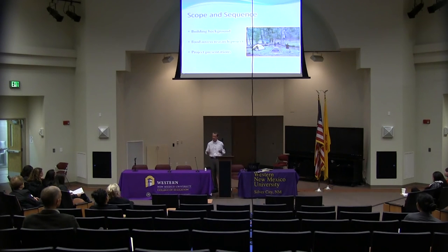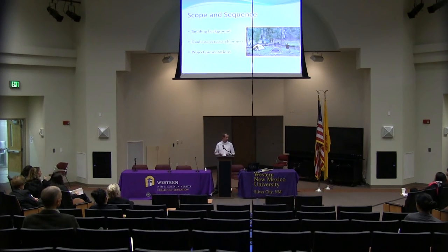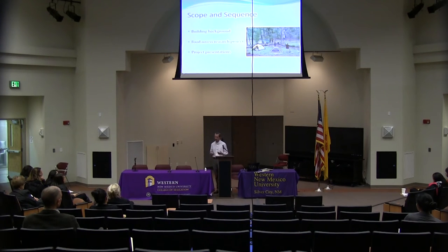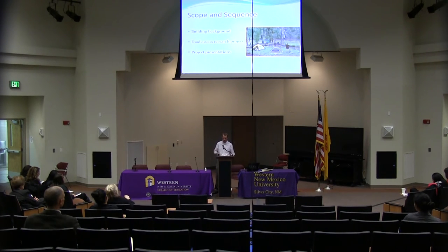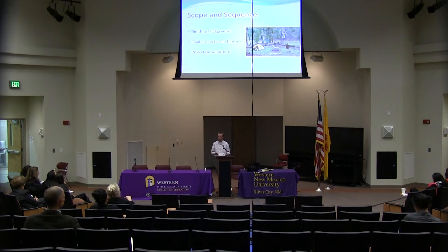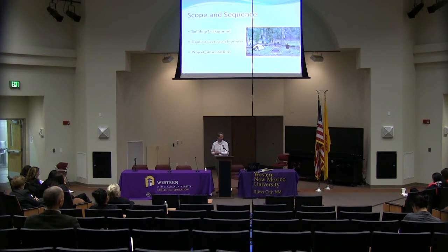The learning segment began by building students' background with an overview of nutritional geography. After that, we engaged in our first journal prompt: how do government subsidies relate to taker economics and affect access to healthy food? The point was to tie what students had been learning in the first quarter about taker economics and leaver economics — a concept from the novel we were reading, Ishmael by Daniel Quinn — into what we'd be learning in this segment on food.